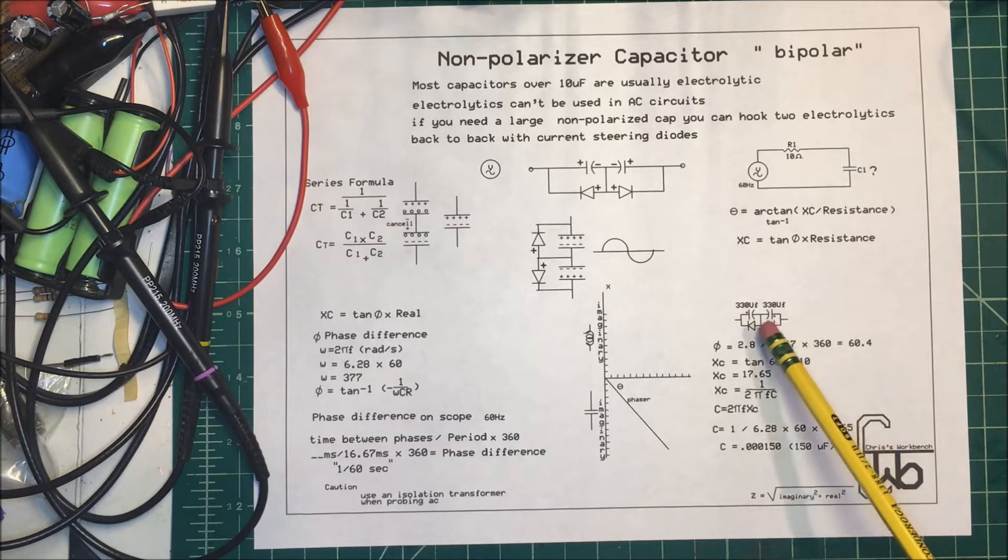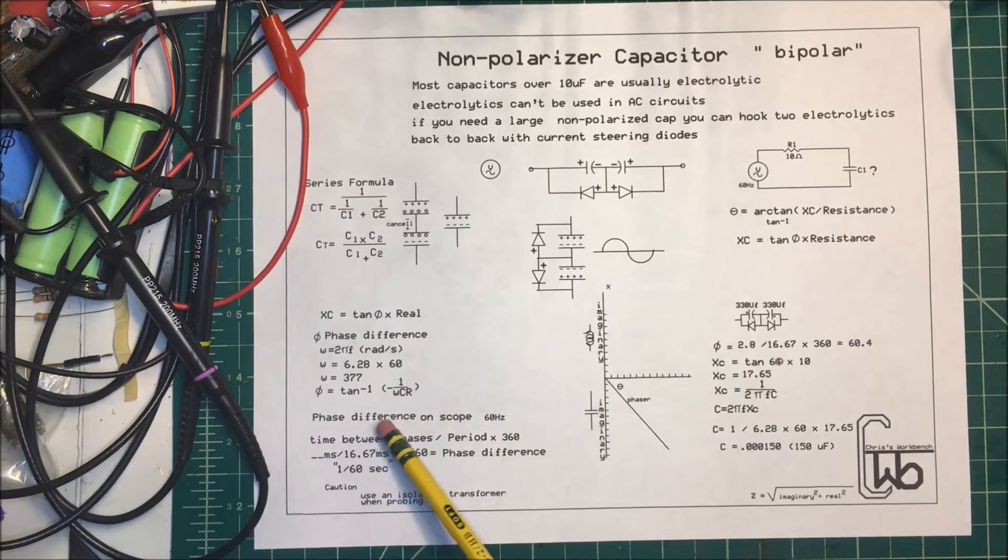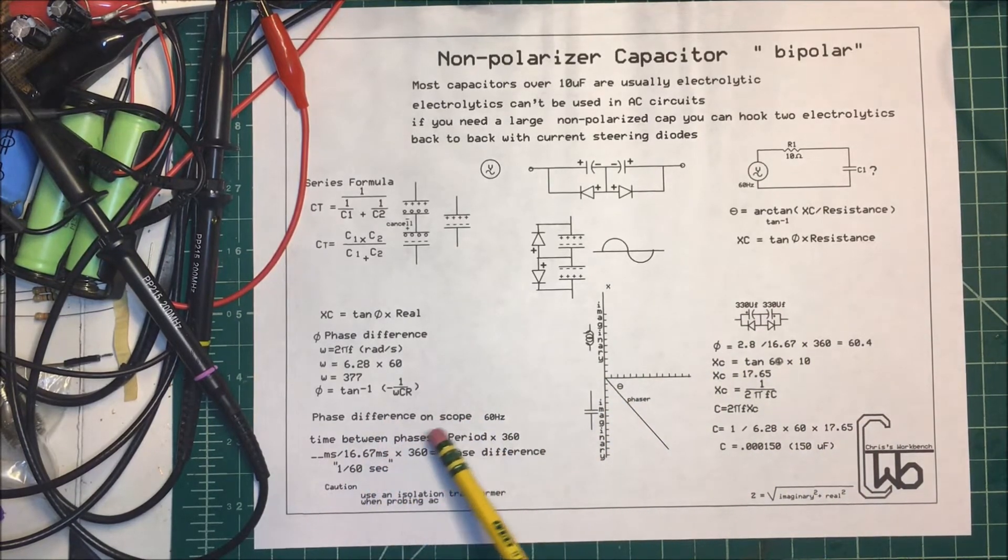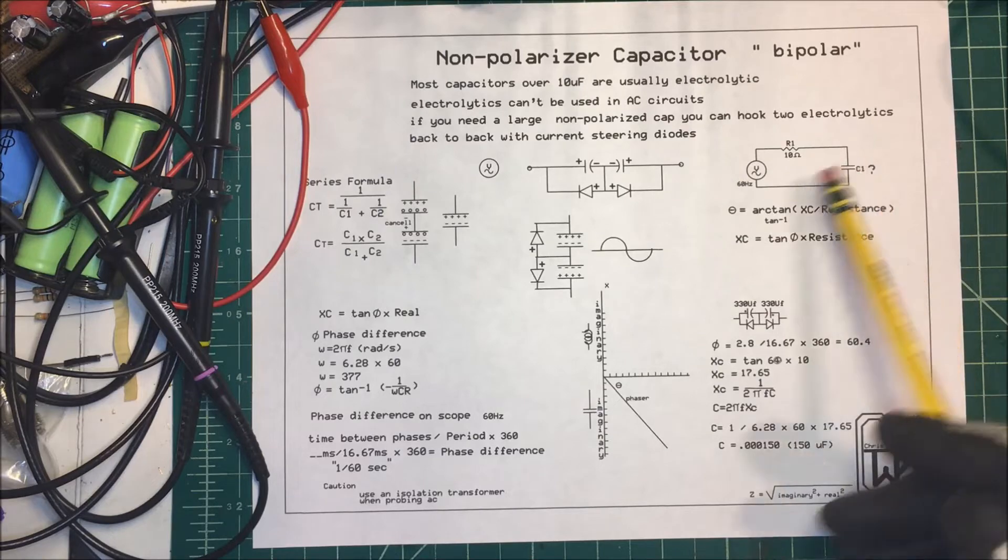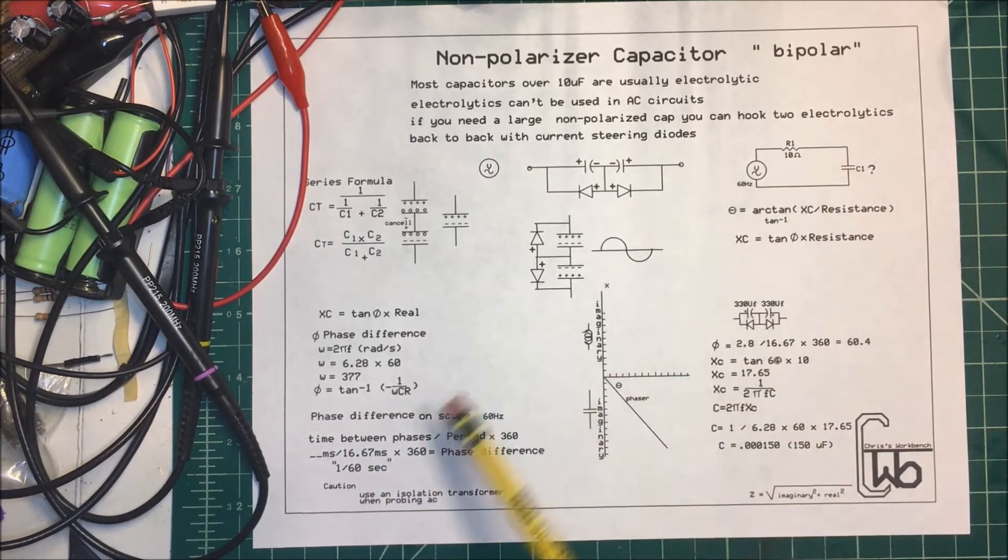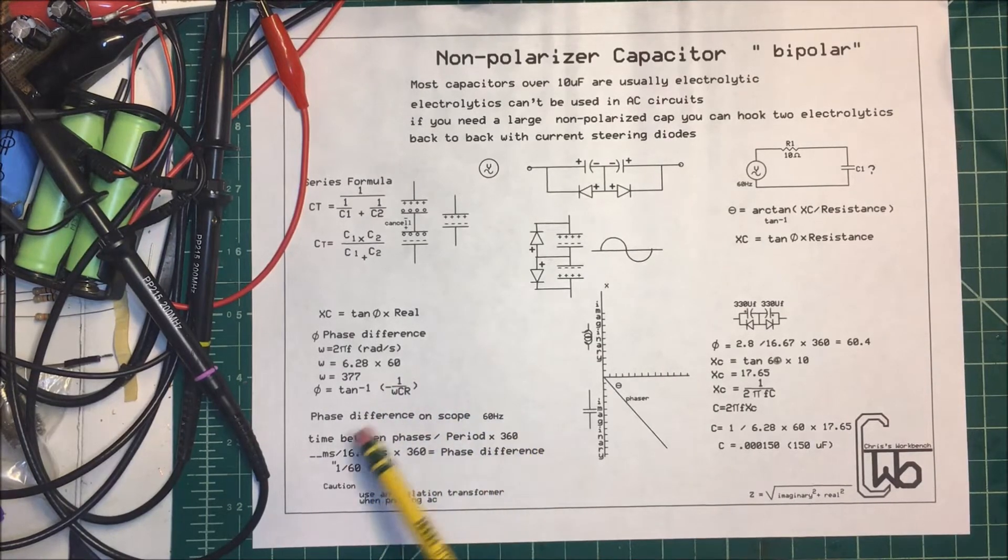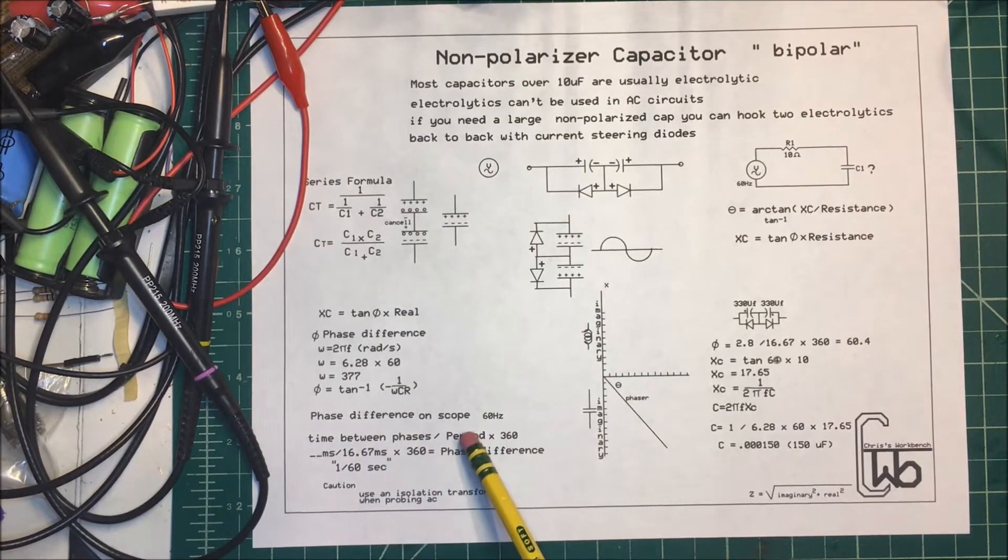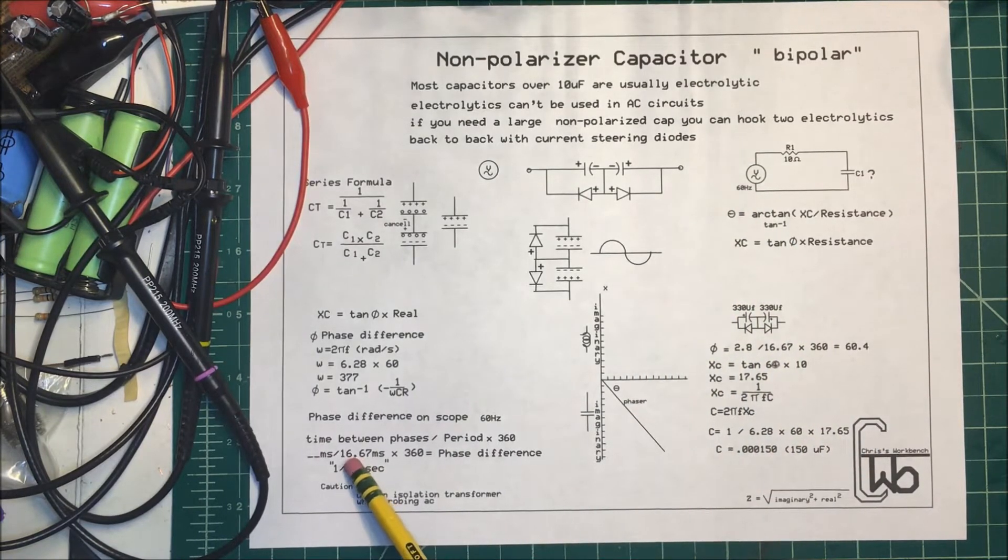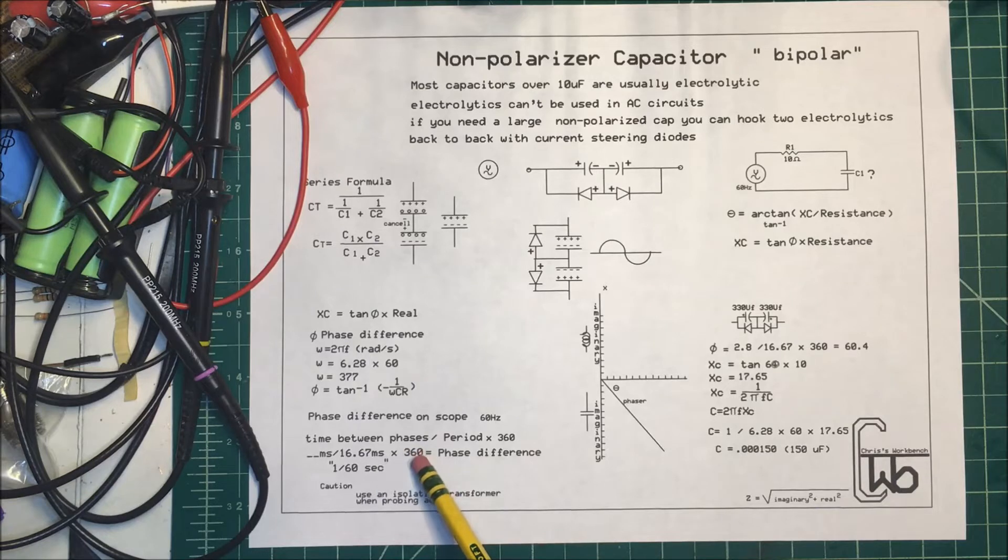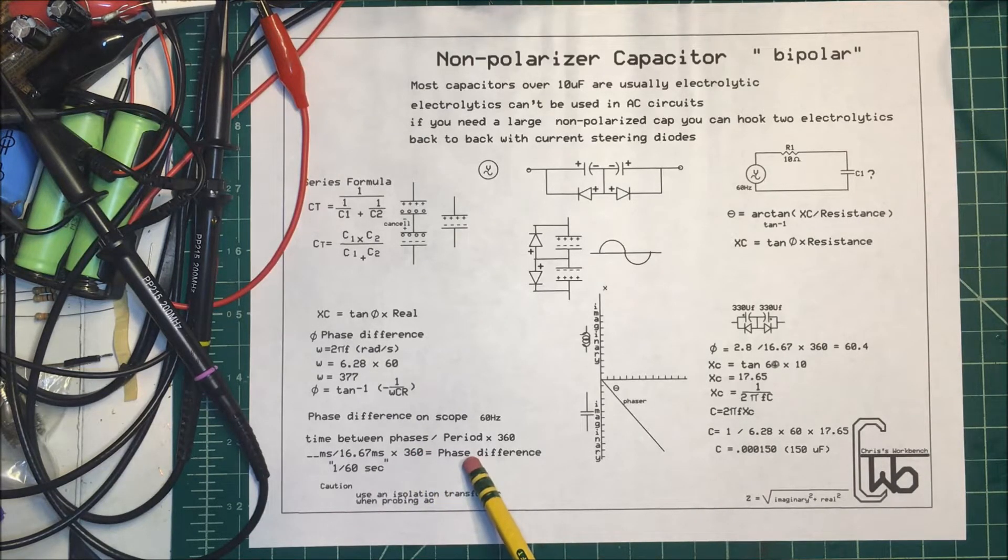I put it on the scope, and we want to find the phase difference on the scope. To do that, we take the time between the phases, and we know that the current is leading the voltage in a capacitive circuit, so the time between phases is the time between the current and the voltage phase. We divide that by the period. The period for 60 cycles is going to be 1/60 of a second, or 16.67 microseconds, and we times that by 360 to get our phase difference in degrees.